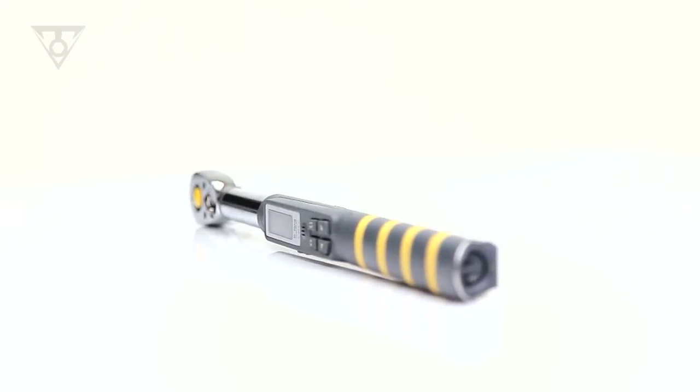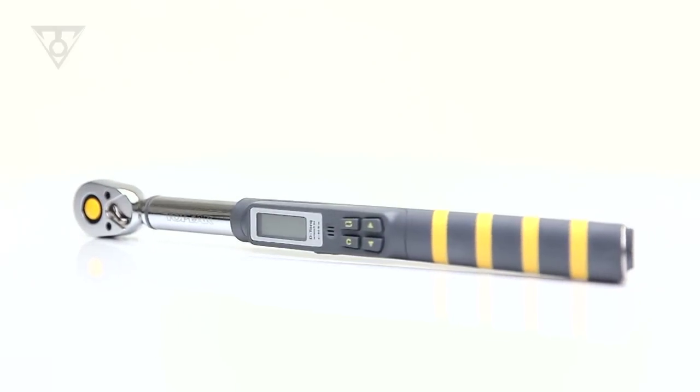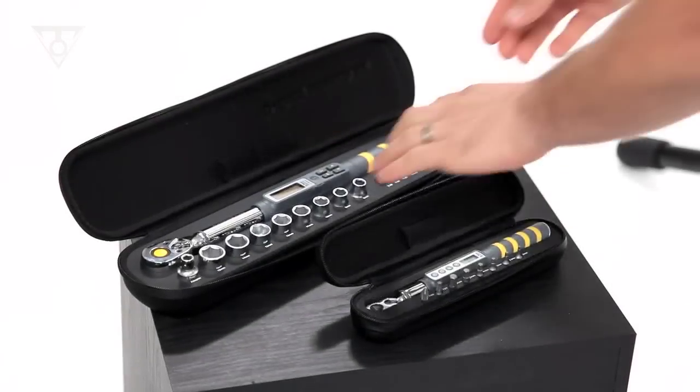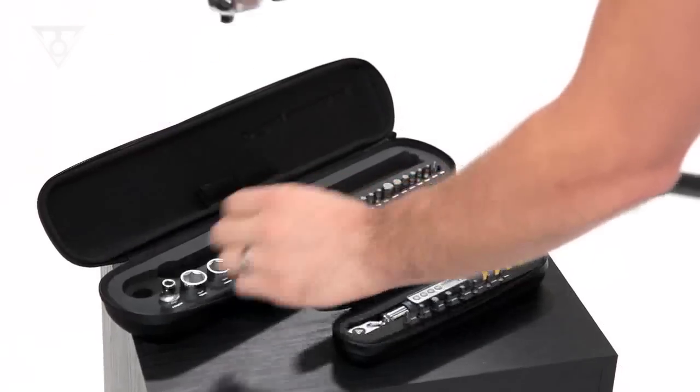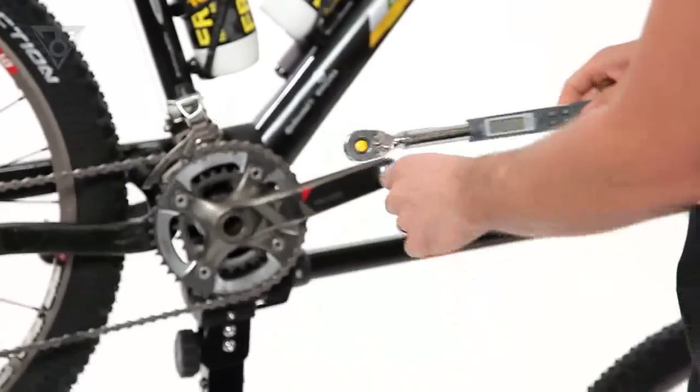The D-Torque DX features a standard 3/8 inch square drive and a torque range of 4 to 80 newton meters. This makes it ideal for bolts requiring a higher torque specification. The complete kit contains a selection of sockets and hardened steel tool bits.